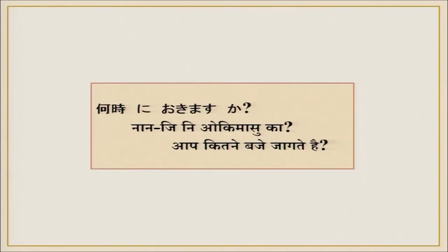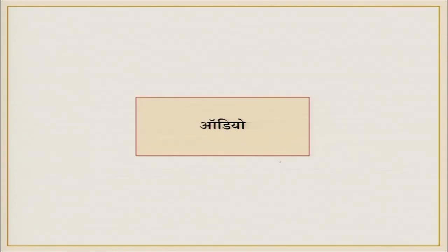Here we have written: 'Naanji ni okimas ka.' Naanji you know, ji you know. This is a new particle and this is the kriya — that is, the verb. Ka, you know, will indicate a question. So let's start our lecture. We will listen to audio and see which words you recognize.